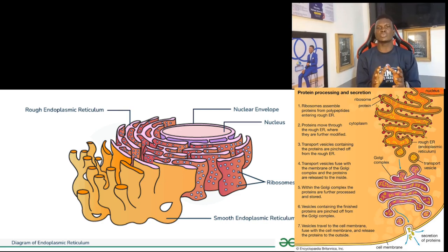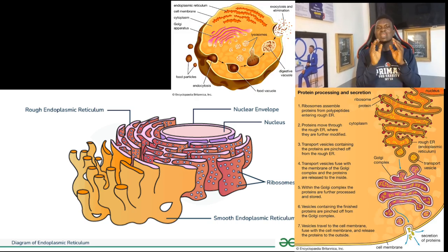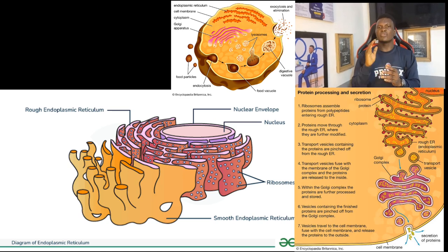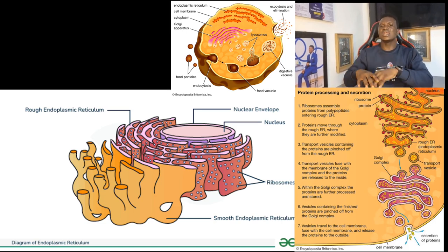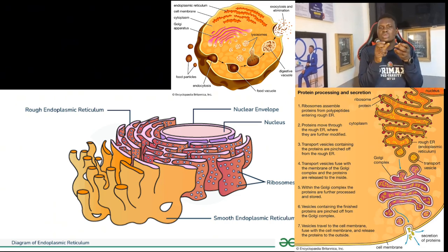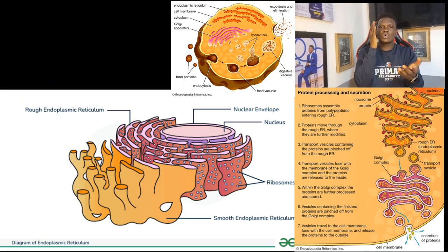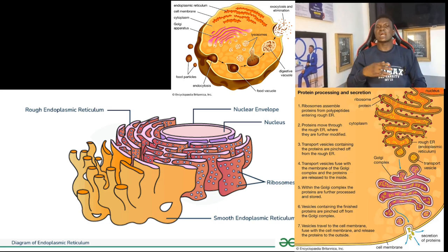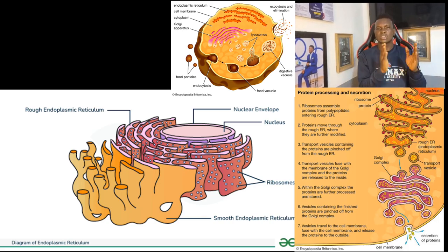Another product of the Golgi apparatus is lysosomes. Lysosomes are small structures that help to degrade unwanted materials in the cell — for example, bacteria or worn-out cells. The lysosomes contain digestive enzymes that break down these unwanted materials. This degradation process is known as phagocytosis.